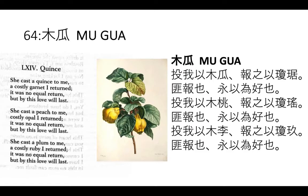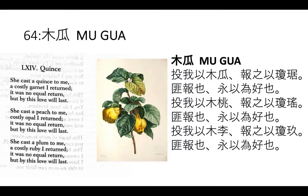This one I like a lot as well — Muguah, translated as "quince" or sometimes "papaya." It's some kind of fruit. This is a love poem that's a little bit more pleasant. "She cast a quince to me, a costly garnet I returned. It was no equal return, but by this love will last. She cast a peach to me, costly opal I returned. It was no equal return, but by this love will last. She cast a plum to me, a costly ruby I returned. It was no equal return, but by this love will last."